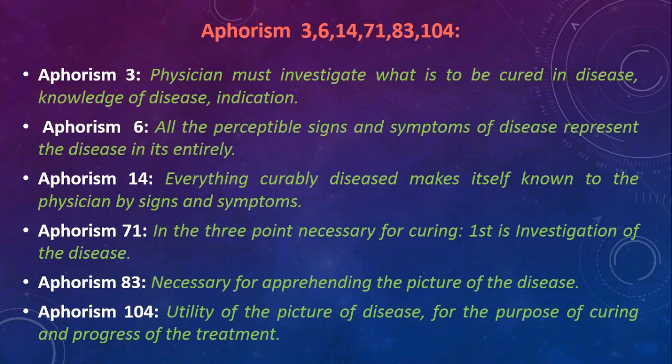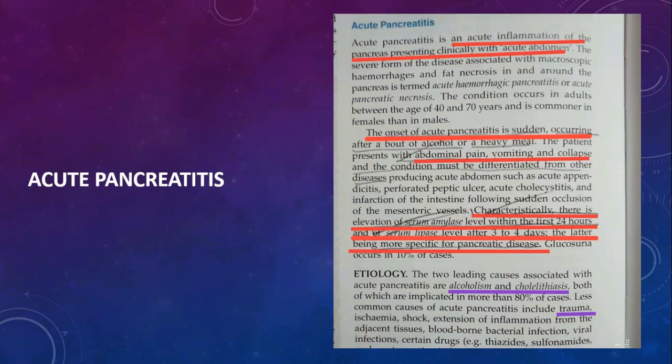For example: acute pancreatitis is an acute inflammation of the pancreas presenting clinically with acute abdomen. The onset is sudden, occurring with abdominal pain, vomiting and collapse. Characteristically, there is elevation of serum amylase level within the first 24 hours, and of serum lipase level after 3 to 4 days — the latter being more specific for pancreatic disease. Etiology for acute pancreatitis includes alcoholism, cholelithiasis and trauma.